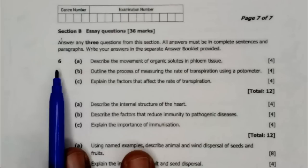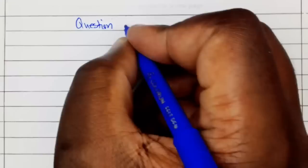Question 6A: Describe the movement of organic solutes in the phloem tissue. Part B: Outline the process of measuring the rate of transpiration using a potometer. Part C: Explain the factors that affect the rate of transpiration.